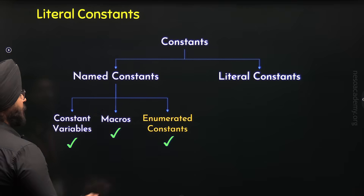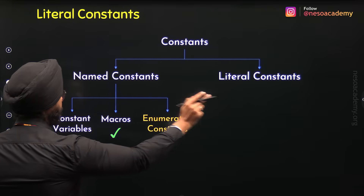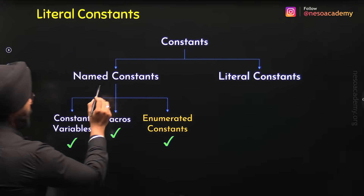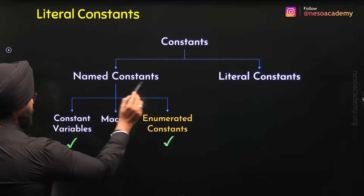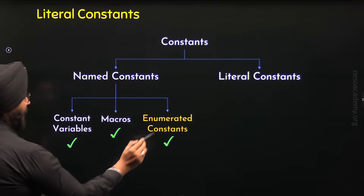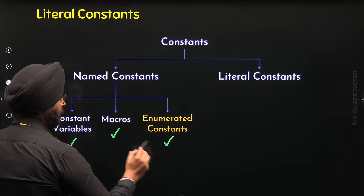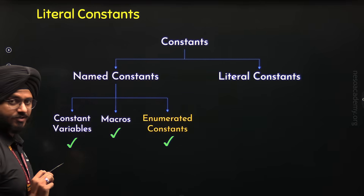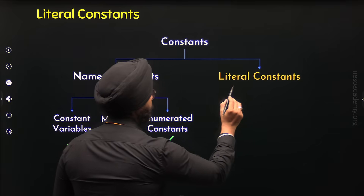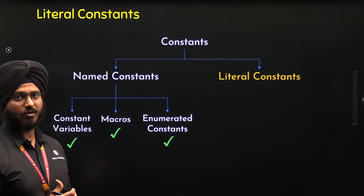We learned about different types of constants. We know there are two types of constants: named constants and literal constants. We learned different types of named constants — constant variables, macros, and enumerated constants. In the previous lecture, we understood enumerated constants. Now, the focus of this lecture is literal constants.